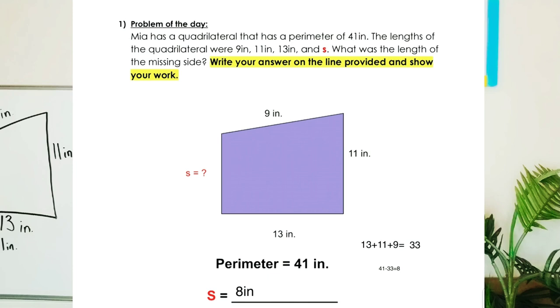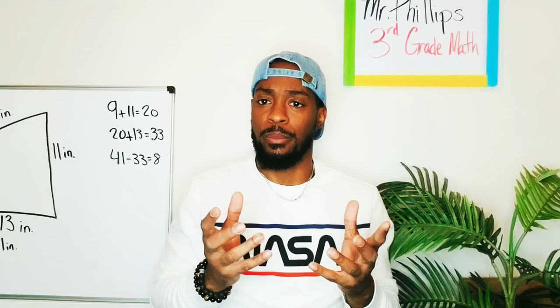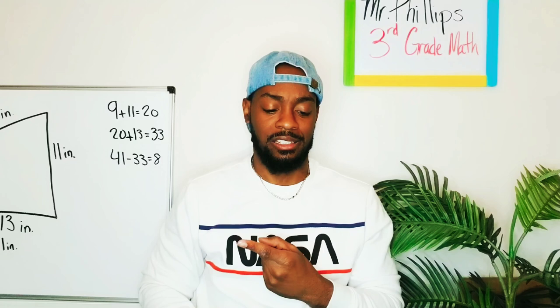First up, we have Jameiracle. So Jameiracle decided to add 13, 11, and 9 and ended up with 33 and then took that 33 from 41 to get 8. So Jameiracle added up the sides that we knew about, took it away from the total, which is the perimeter, and ended up with the missing side. Way to go, Jameiracle.